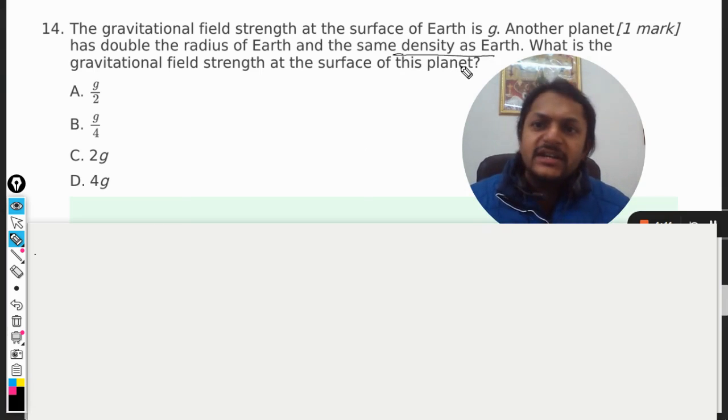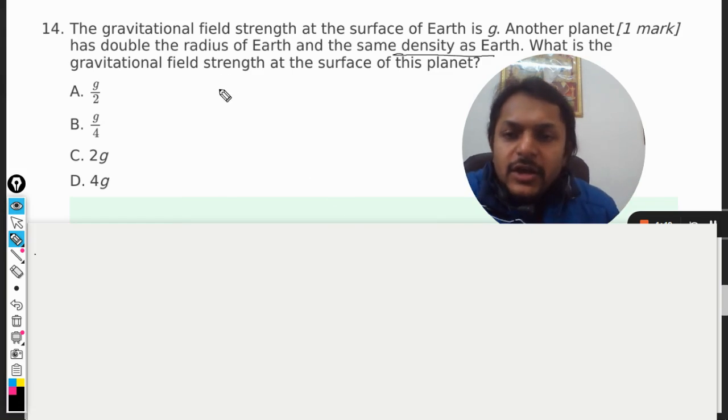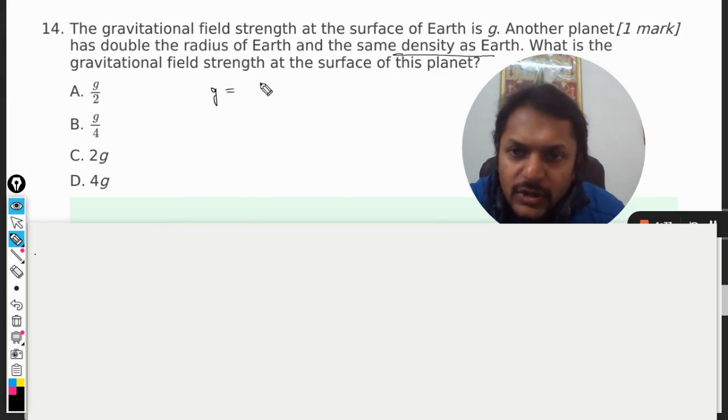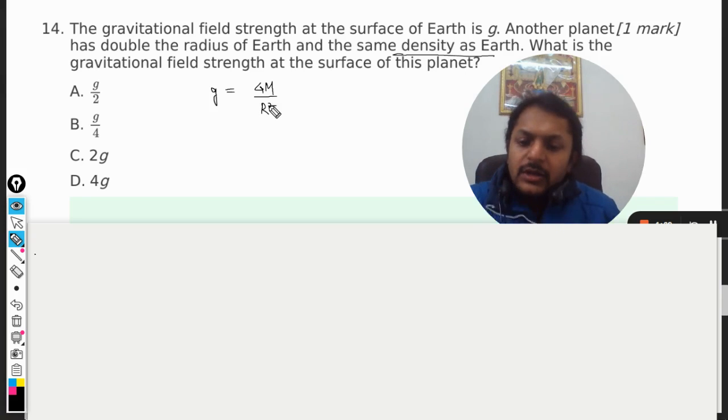Okay fine, so first of all we must find the expression for g and what is that? g is equal to GM by r square, where smaller r is any distance between the center of the earth and the body because it might be at some height.